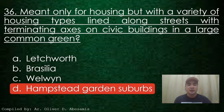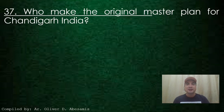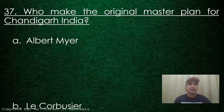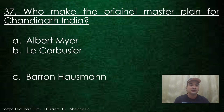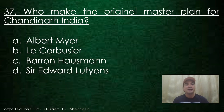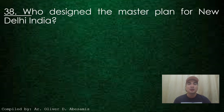Number 37. Who made the original master plan for Chandigarh, India? A. Albert Mayer, B. Le Corbusier, C. Baron Haussmann, D. Sir Edward Lutyens. Answer: A. Albert Mayer.